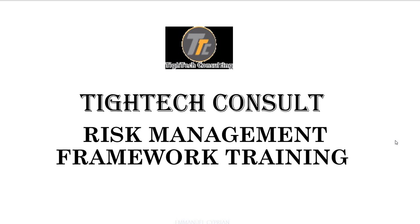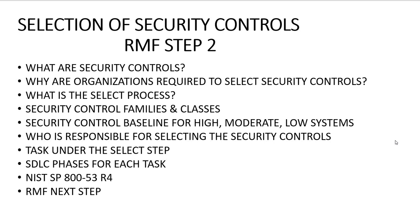In this step, we shall be looking at what are security controls, why organizations are required to select security controls, what is the select process, security control families and classes, security control baselines for high, moderate, and low systems, who is responsible for selecting security controls, tasks under the select step, SDLC phases for each task, NIST SP 800-53 Revision 4, and lastly, the RMF next step.